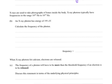Calculate the frequency of the photon. So, we've been given the energy, we know Planck's constant, and we can calculate the frequency this way. So, F equals E over h.